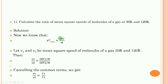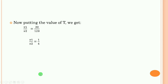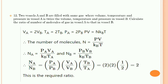We write v1 squared equal to 3RT1 upon M and v2 squared equal to 3RT2 upon M. R is the gas constant, same for both, and M (molar mass) is also the same since it's the same gas. Taking the ratio v1 upon v2, the terms 3R/M cancel, leaving T1 upon T2, which is 30/120 = 1/4. This is the answer — being a ratio of the same physical quantity, there is no unit.